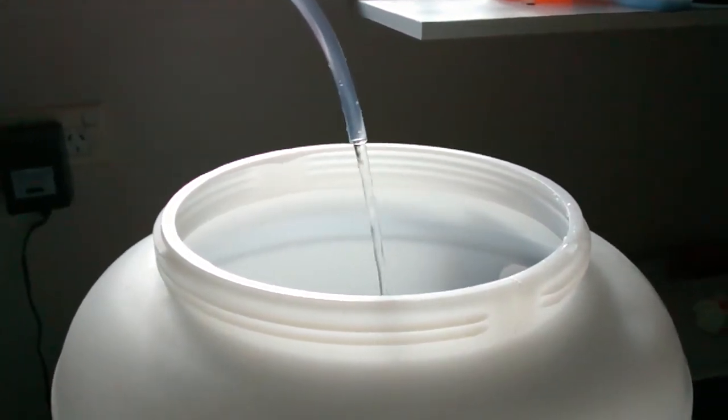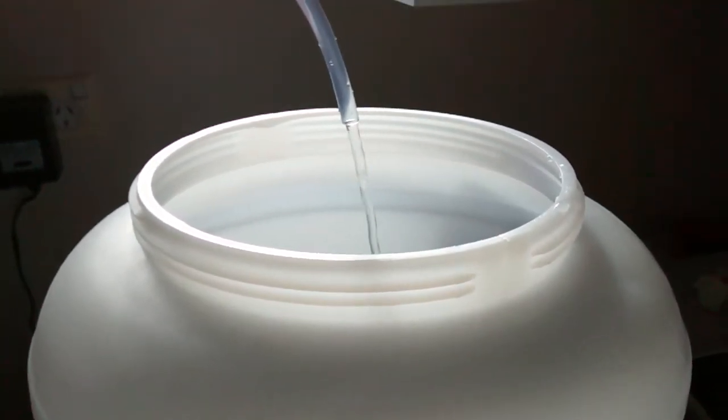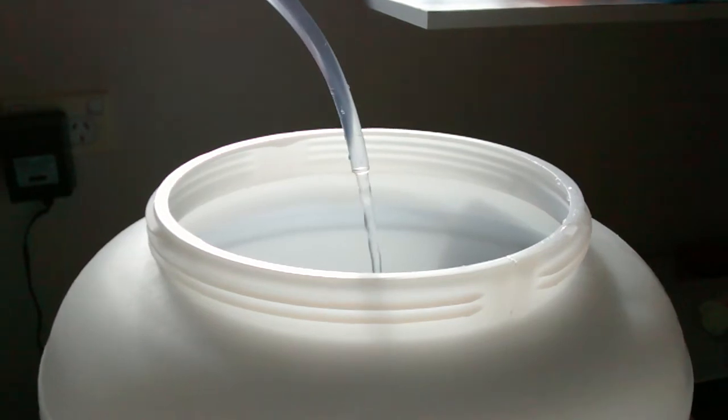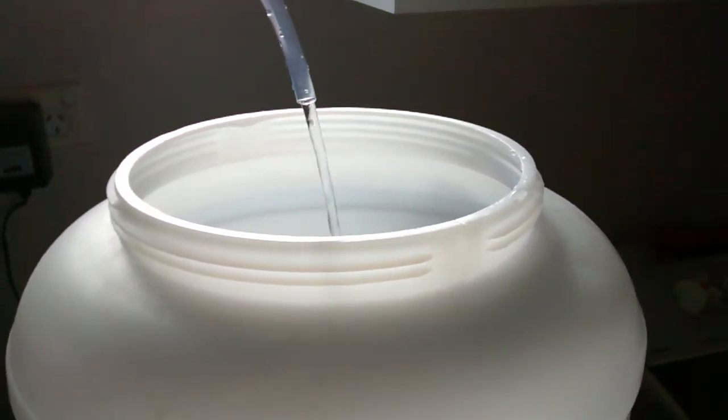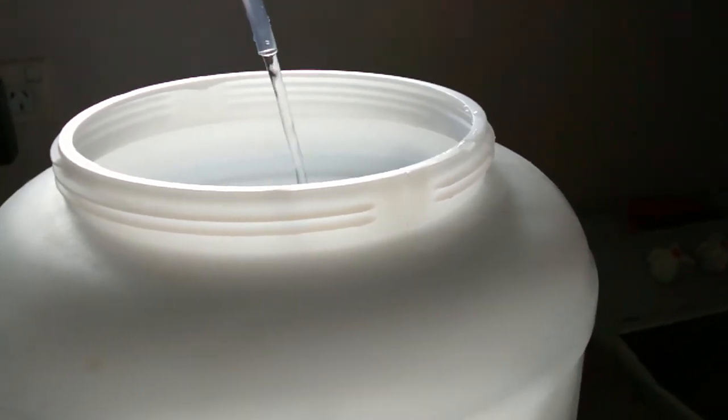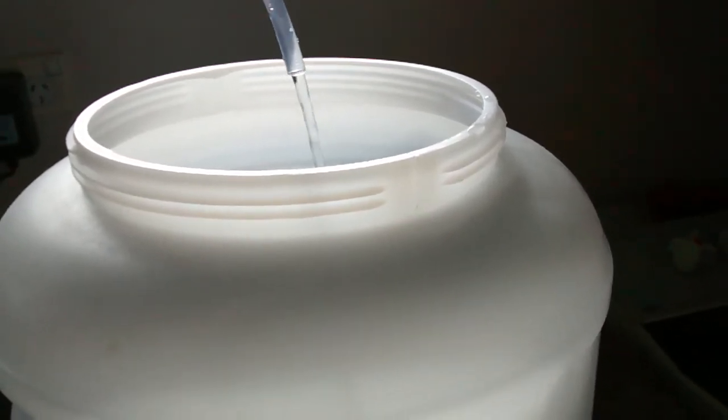So at 12 volts it'll pump 200 liters of liquid an hour which is just over three liters a minute and I think that's going to be more than fine for my recirculating mash.